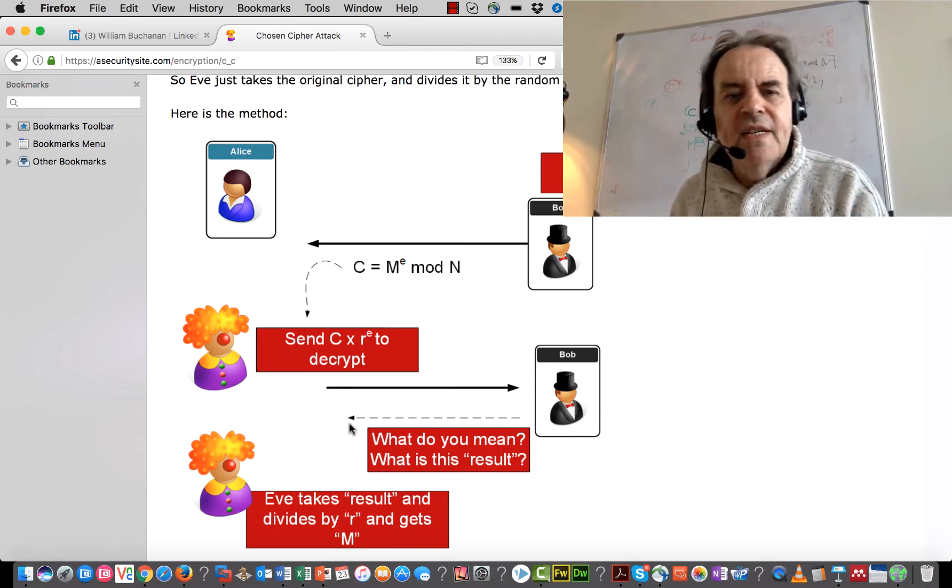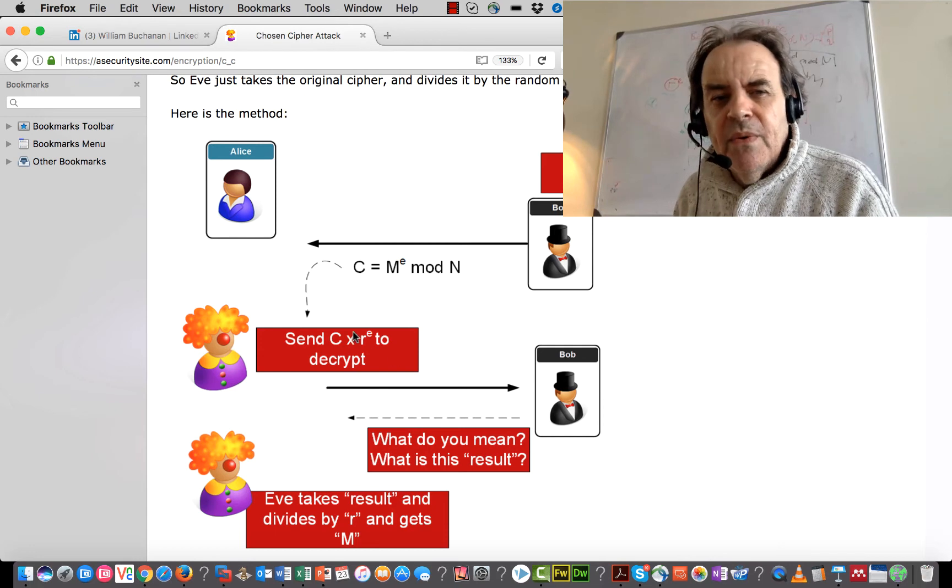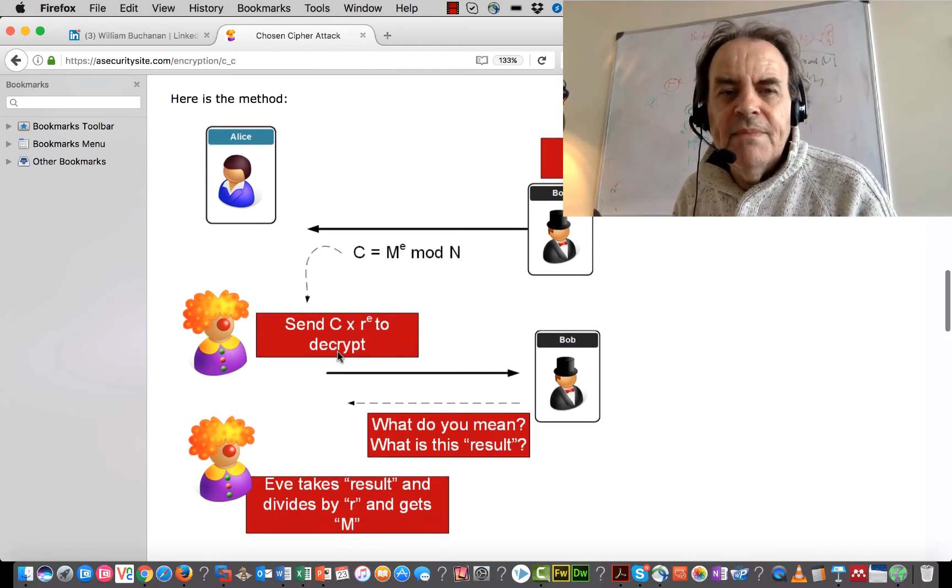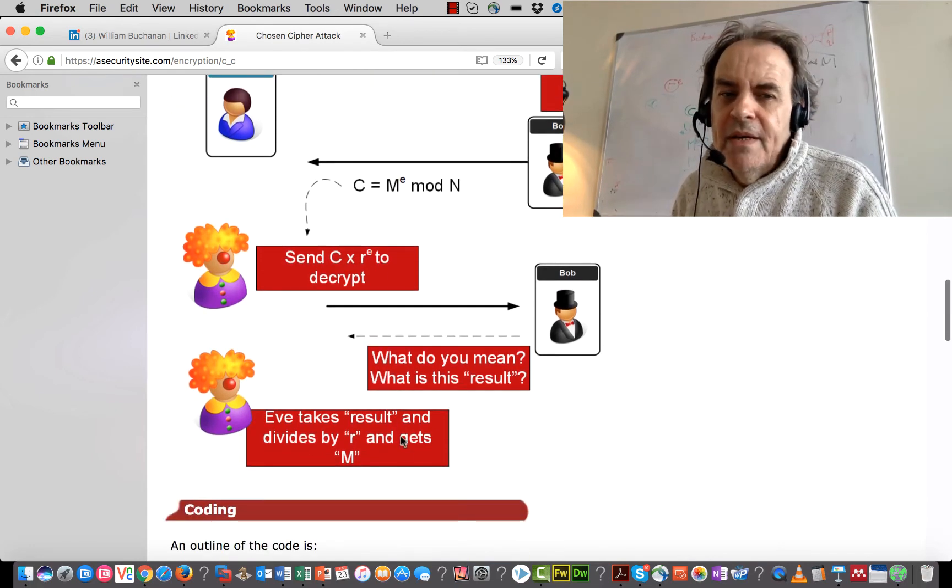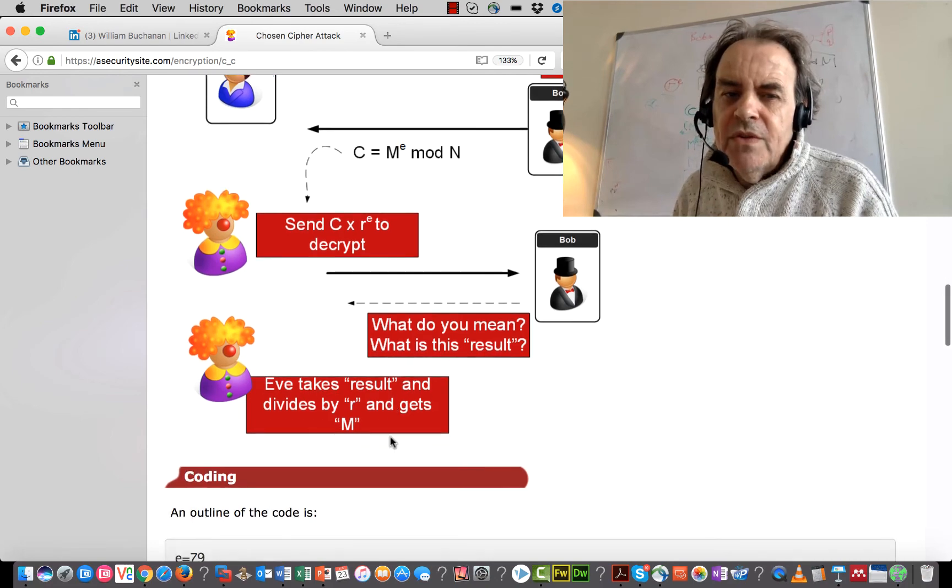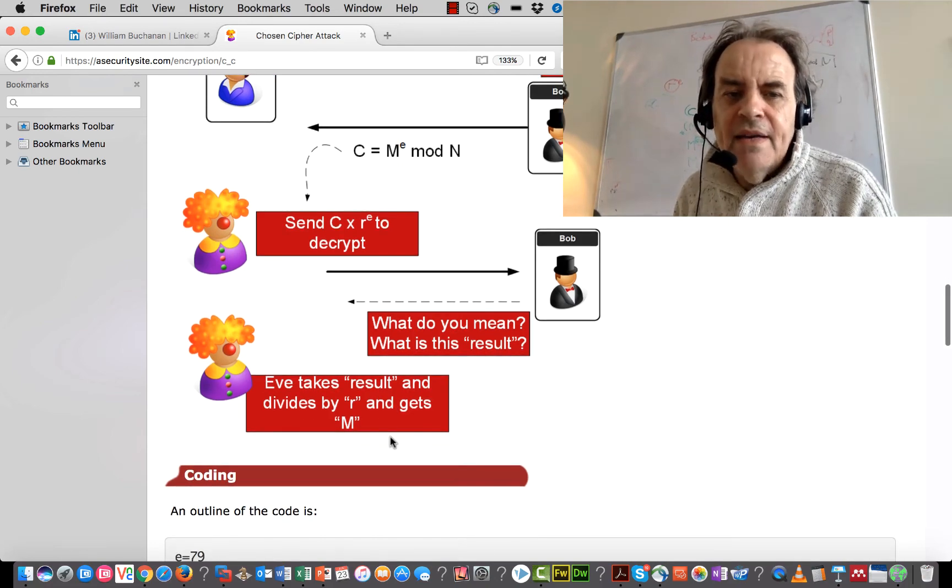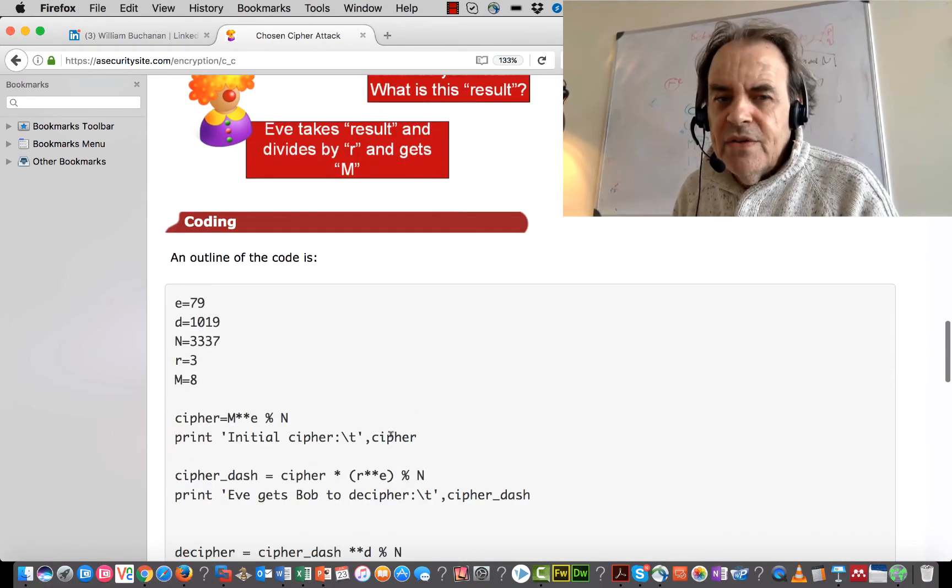Alice doesn't understand what it was and gives the message back again. And then from the result, we just divide by R and we get the results.